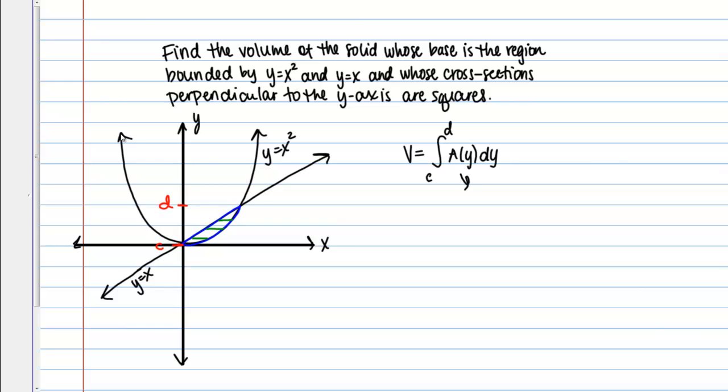So a of y then is simply the area of a cross section. So let's spend a few minutes trying to come up with what that formula should look like.